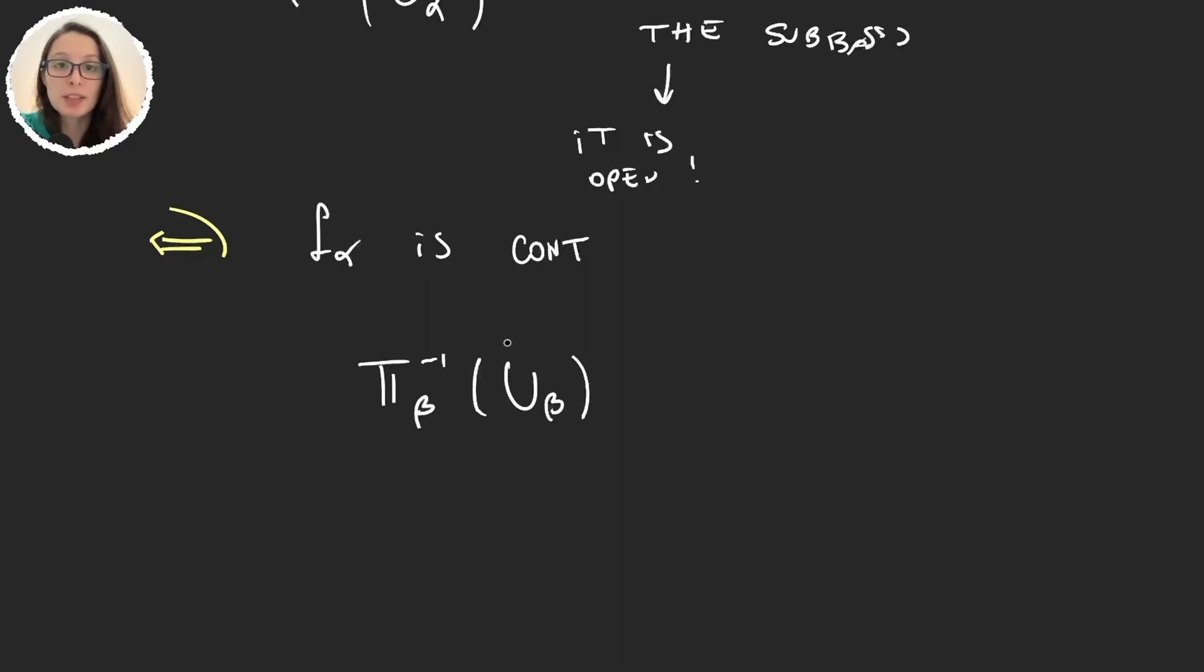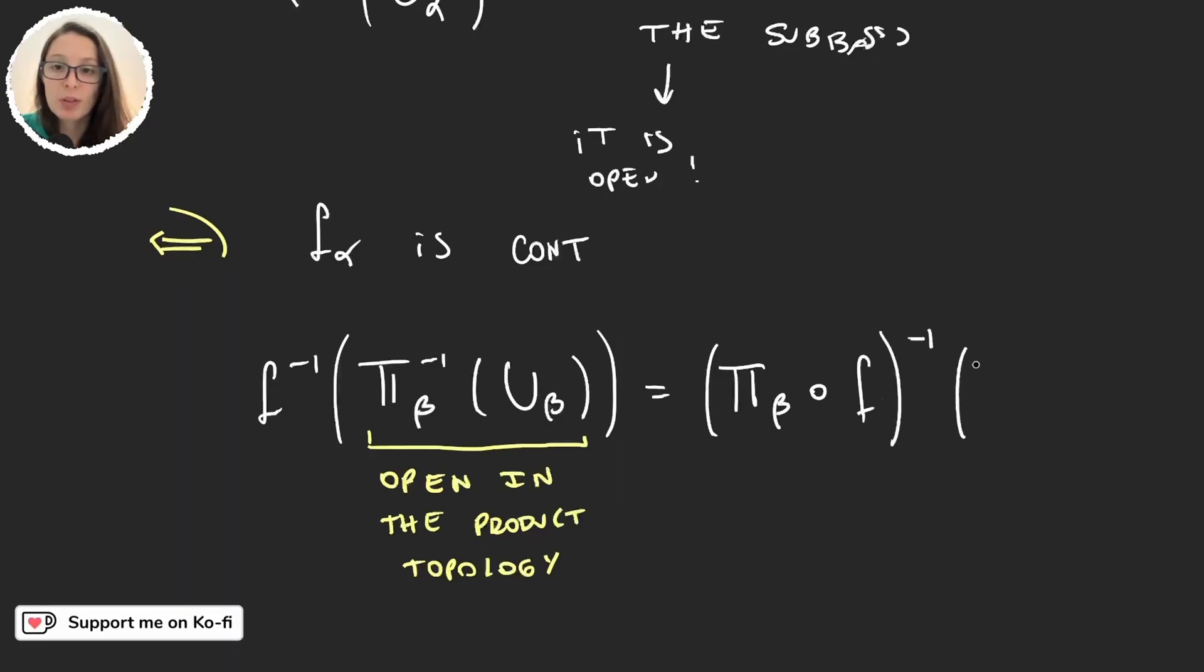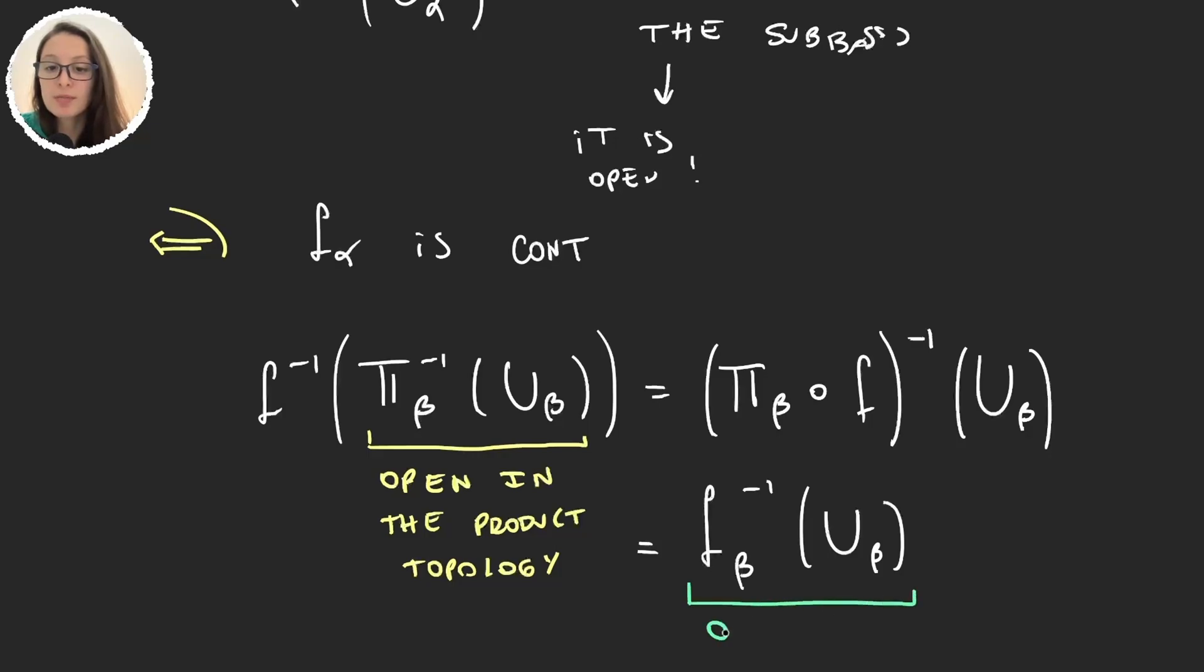So what I'm going to do is, we'll take the preimage of some open set, this is obviously an open set in the product, and now for this element, take the preimage of f. This element is an open set in the product topology, and so I'm taking just the preimage of an open set, but this is actually π_β composed with f, the preimage of U_β. And π_β composed with f is actually f_β. And now because f_α is continuous for all α, this has to be an open set. And so, the function f is continuous.